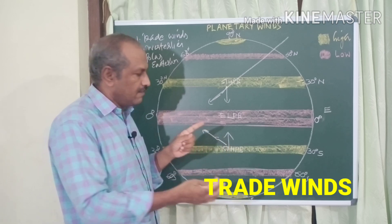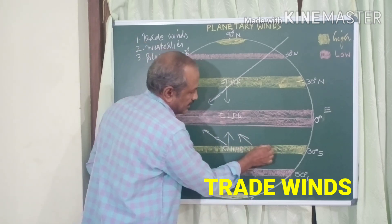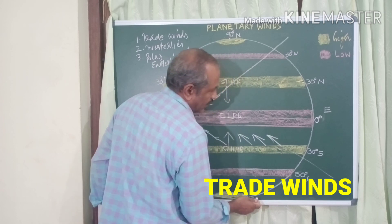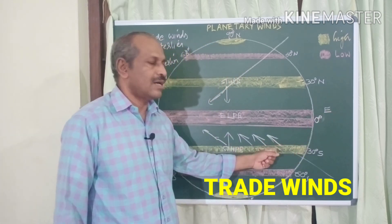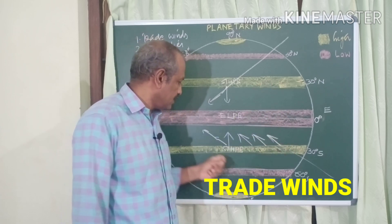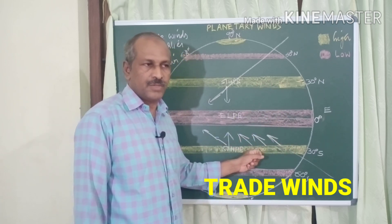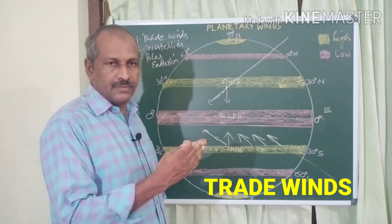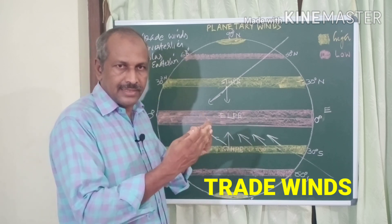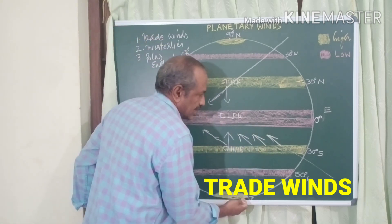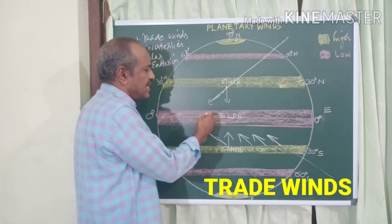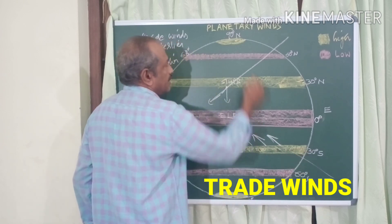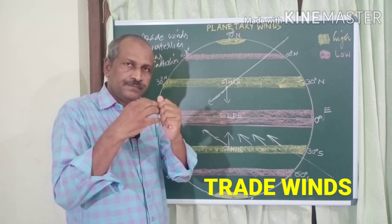In the southern hemisphere, the wind deflects to its left. The trade wind blowing from the subtropical high pressure belt to the equatorial low pressure belt in the southern hemisphere is called the southeast trade wind, because due to the Coriolis force it is deflected to its left and blows from the southeast direction. In the equatorial region — the doldrums — the southeast and northeast trade winds converge.